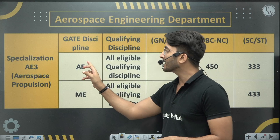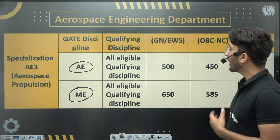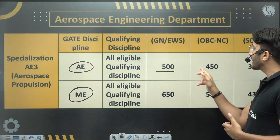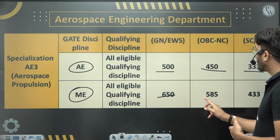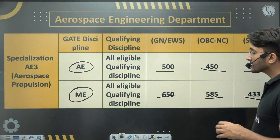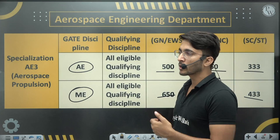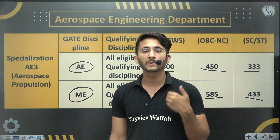For Aerospace Propulsion, if you write GATE in AE or ME you are eligible. The minimum GATE scores required are mentioned in the PDF which will be shared on the Kuldeep Sir underscore PW Telegram channel.